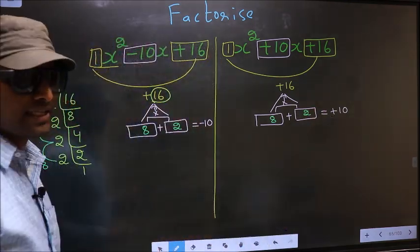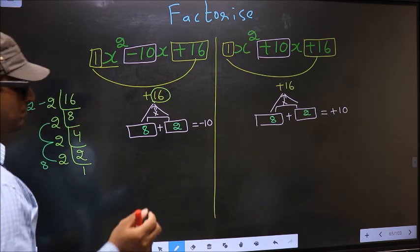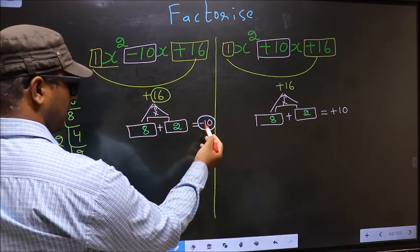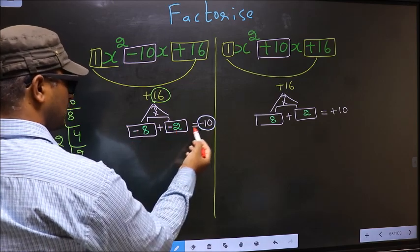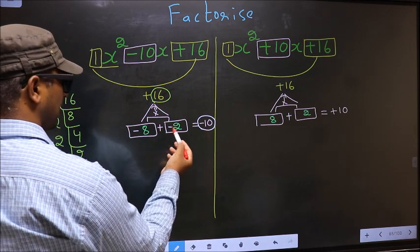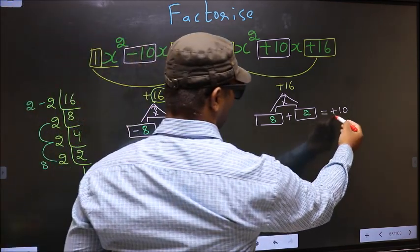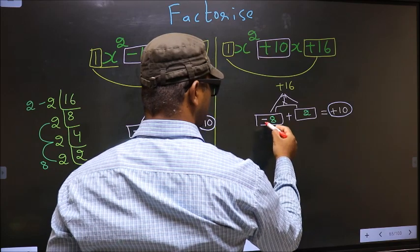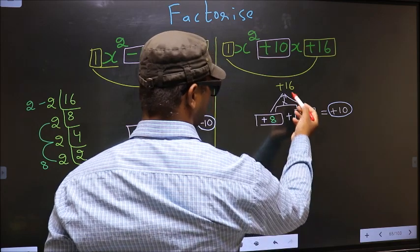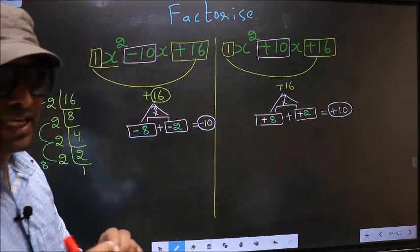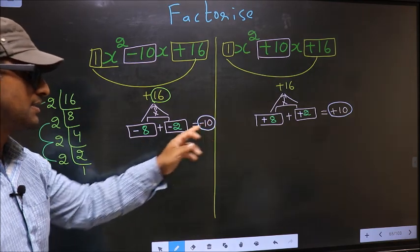The difference arises while adjusting the signs. Over here we have minus 10. To get minus 10, we should place negative here and also here — minus 8 and minus 2 is minus 10, and minus 8 into minus 2 is plus 16. Here we have plus 10. To get plus 10, we should put plus here and also here — plus 8 and plus 2 is plus 10, and plus 8 into plus 2 is plus 16. So we have adjusted the signs. The difference arises only while adjusting the signs; rest of it is the same.